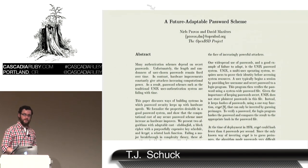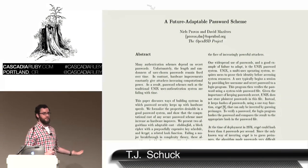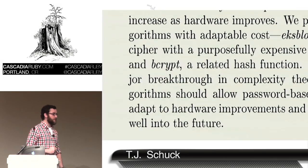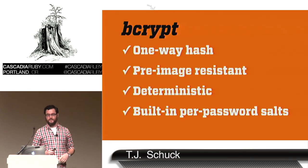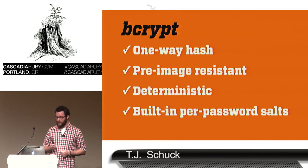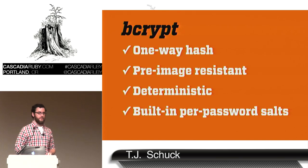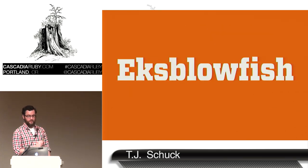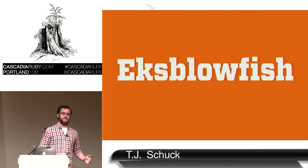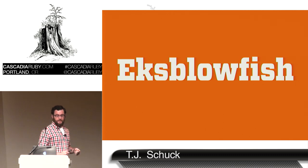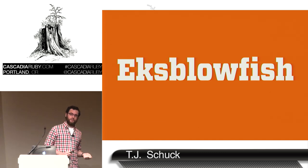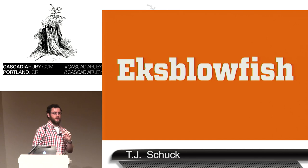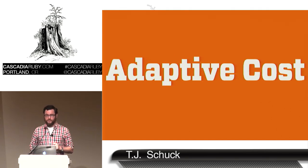In 1999, Niels Provos and David Mazières published a paper about a future-adaptable password scheme trying to solve this exact problem. They came up with bcrypt. bcrypt has all the goodies we've already discussed: it's a one-way hash, pre-image resistant, deterministic, and has built-in salt so you don't have to worry about that anymore. But it has two additional notable features. One is that the underlying cipher is EKS-Blowfish — based on Blowfish, which is notably expensive and known for taking a long time to boot up. EKS stands for Expensive Key Schedule, so it requires more memory, making GPUs and specialized hardware less feasible in an attack.